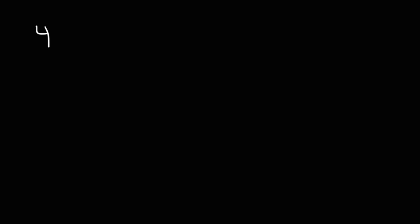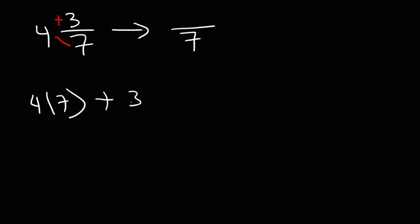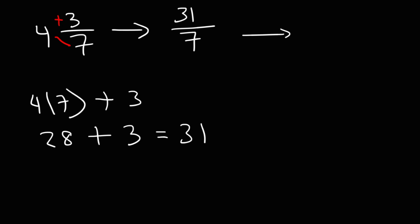Let's find the reciprocal of 4 and 3 over 7. First, let's change this into an improper fraction. Rewrite the denominator, which is 7, and then multiply 4 times 7 and add 3 to it. So that's 4 times 7 plus 3. 4 times 7 is 28, and 28 plus 3 is 31. So this is 31 over 7. To find the reciprocal, we flip the fraction, and this becomes 7 over 31.